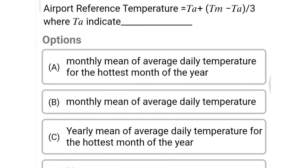Next question: airport reference temperature is TA + (TM − TA) / 3, where TA indicates — option A monthly mean of average daily temperature for the hottest month of the year. The correct answer is option A, monthly mean of average daily temperature for the hottest month of the year.